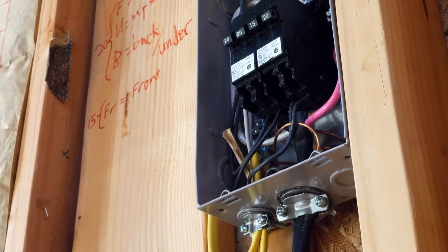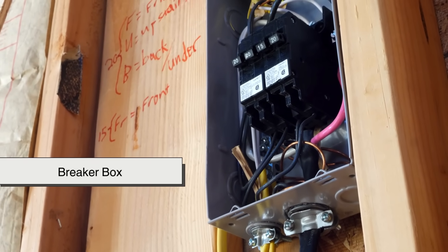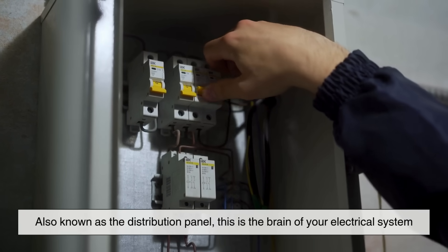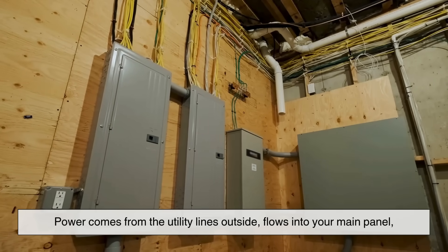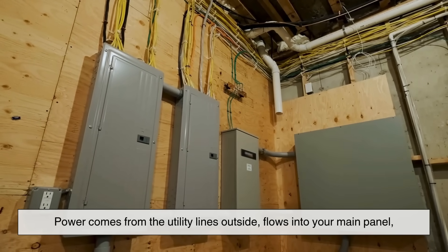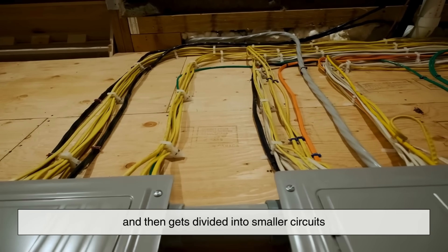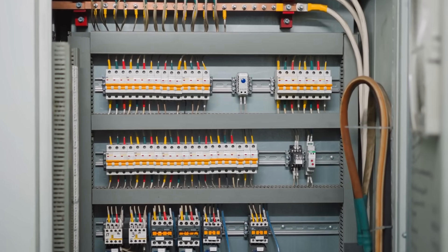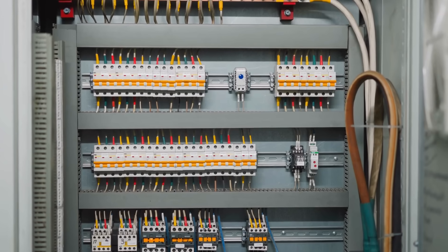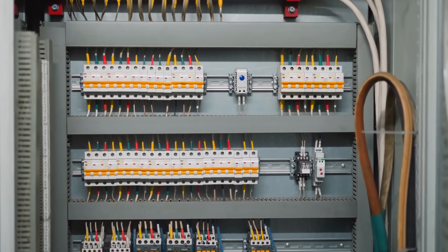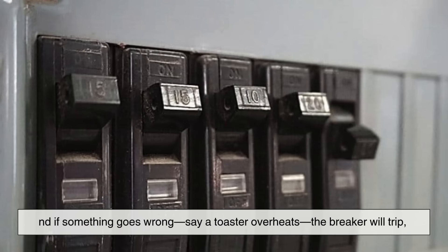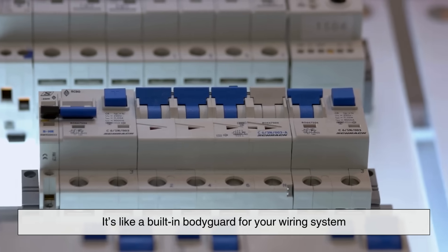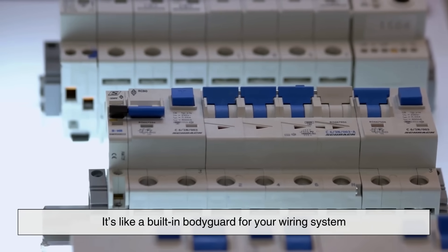Now let's talk about where it all starts inside your home, the breaker box. Also known as the distribution panel, this is the brain of your electrical system. Power comes from the utility lines outside, flows into your main panel, and then gets divided into smaller circuits. Each circuit powers a different part of your home. Maybe one for the kitchen outlets, one for the lights, another for heavy appliances like the air conditioner. And if something goes wrong, say a toaster overheats, the breaker will trip, cutting off power before things get dangerous. It's like a built-in bodyguard for your wiring system.